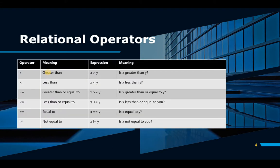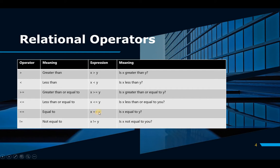Relational operators are the exact same operators you see in math. The greater-than sign means expression X is greater than Y. Less-than works similarly. These relational operators are used in programming as well. The only operator that is different is the not-equal-to, which is an exclamation mark and an equal sign. The equal-to is no longer one equal — it's two equals. Remember, one equal means you're assigning something, so X = Y assigns the value of Y to X. But two equals is an expression that validates: is X equal to Y? If it is, then do whatever follows it.